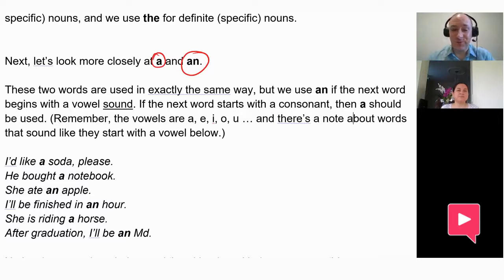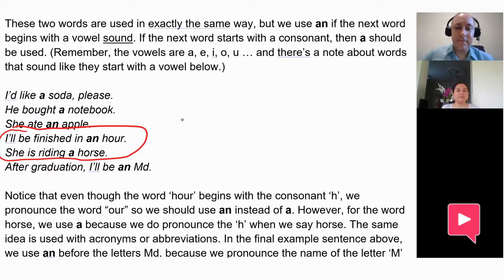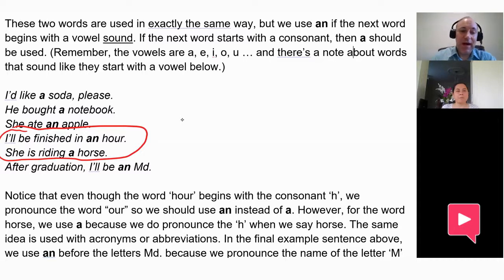But just like most rules in English, there are exceptions. Look at these examples: 'I'll be finished in an hour' and 'She is riding a horse.' In both cases the letter after the article is H — so why do we use 'an' in the first sentence and 'a' in the second? Because it's about the sound, not the letter. If it's a vowel sound, we use 'an.' We don't pronounce the H in 'hour' — we say 'our' — so we use 'an.' But in 'horse' we do pronounce the H sound.